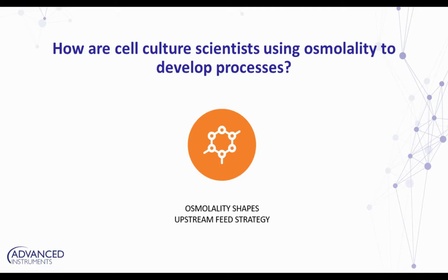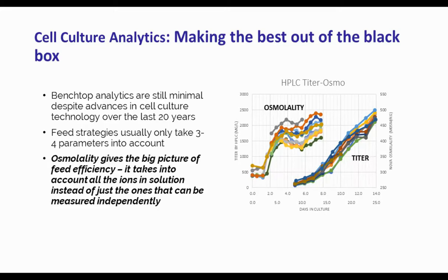What does that look like as output? I happened to bring some data. What I'm showing here are osmo traces and protein titer across a 14-day culture. Benchtop analytics are still a little light in the cell culture arena. By looking at a multivariate parameter like osmo, you're taking into account all the ions in solution — you can understand how cells are responding to the feeds and utilizing all the nutrients within those feeds without having to measure each nutrient individually. Across the final day of culture, osmolality spans anywhere from 400 to 500, depending on the feed condition, and the light blue condition is commensurate with the best production.